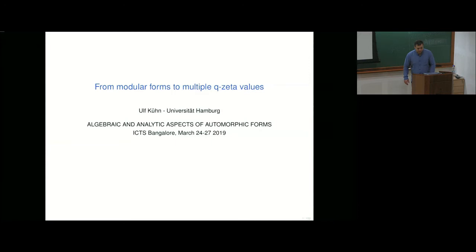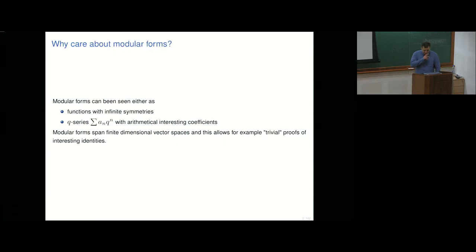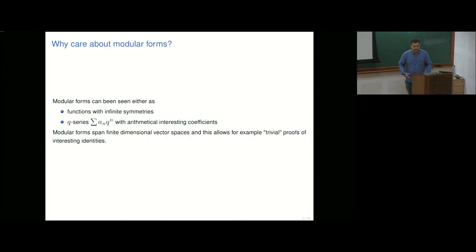Why should we study modular forms? Modular forms have many facets. You can see them either as functions with an infinite set of symmetries, or you could see them as q-series with very nice arithmetical, interesting coefficients. We've heard the word Ramanujan tau function, for example. And modular forms span a finite dimensional vector space.